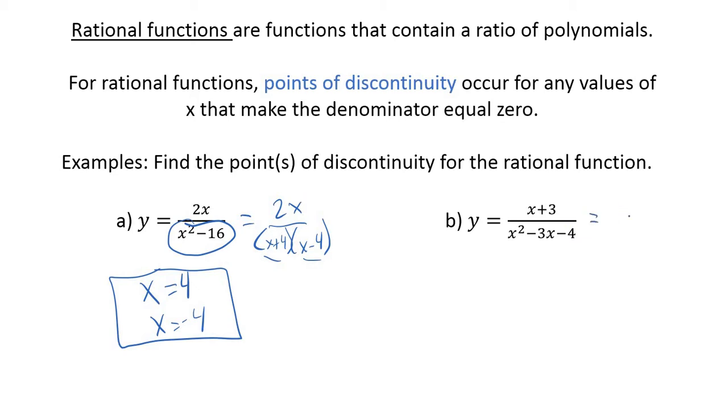How about this one? Very similar. Now we've got a trinomial in the bottom. I want two factors that multiply to make negative 4 and add to make negative 3. What are factors of negative 4? I've got 1 and 4, or 2 and 2. But they need to add to make negative 3, so 1 and 4 are our options. I need a minus 4 and a positive 1. So the factors are (x-4)(x+1). If I set those equal to zero, I get x equals negative 1 and x equals positive 4. There would be my two points of discontinuity.